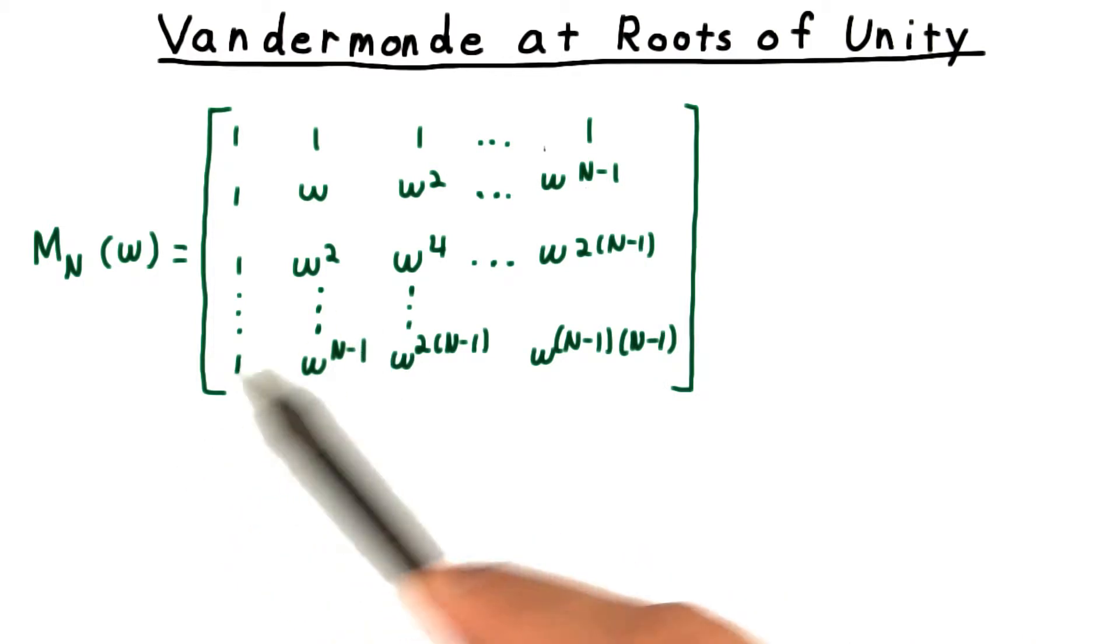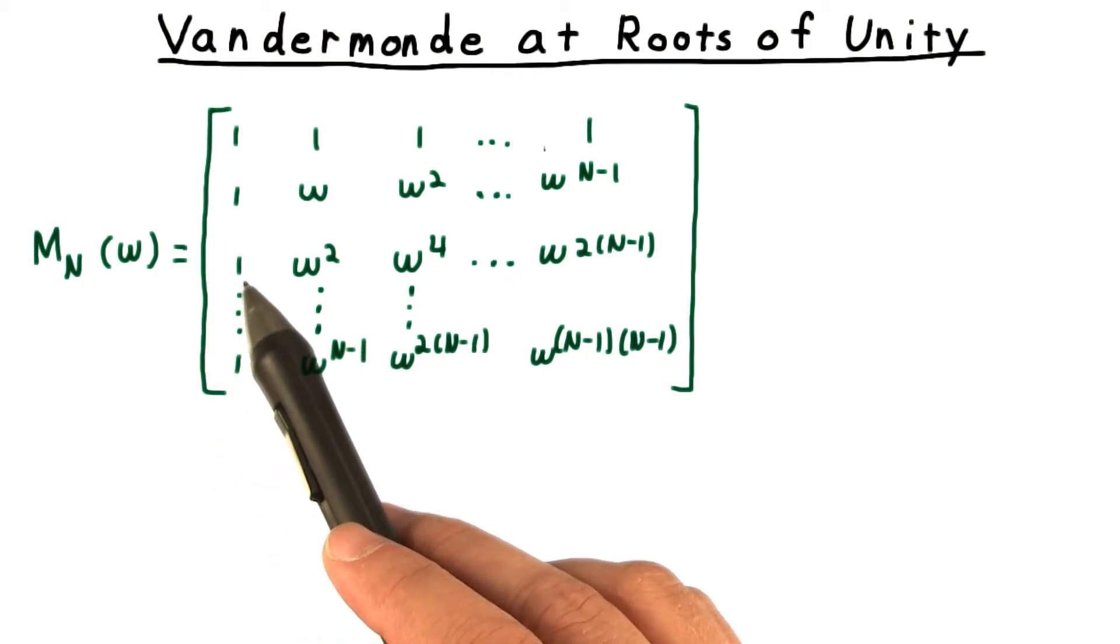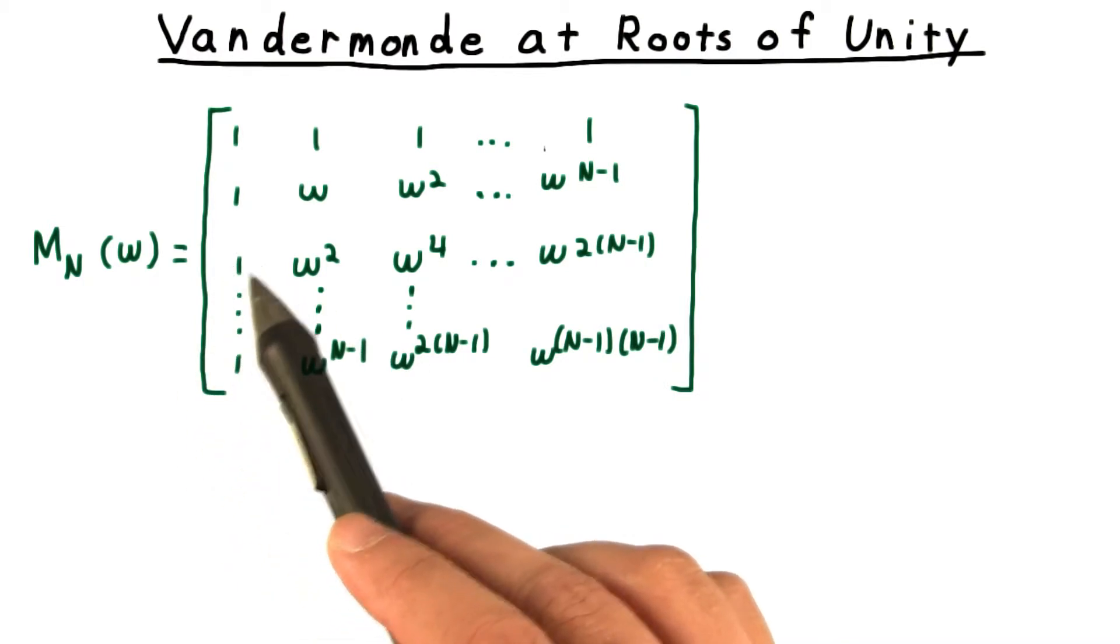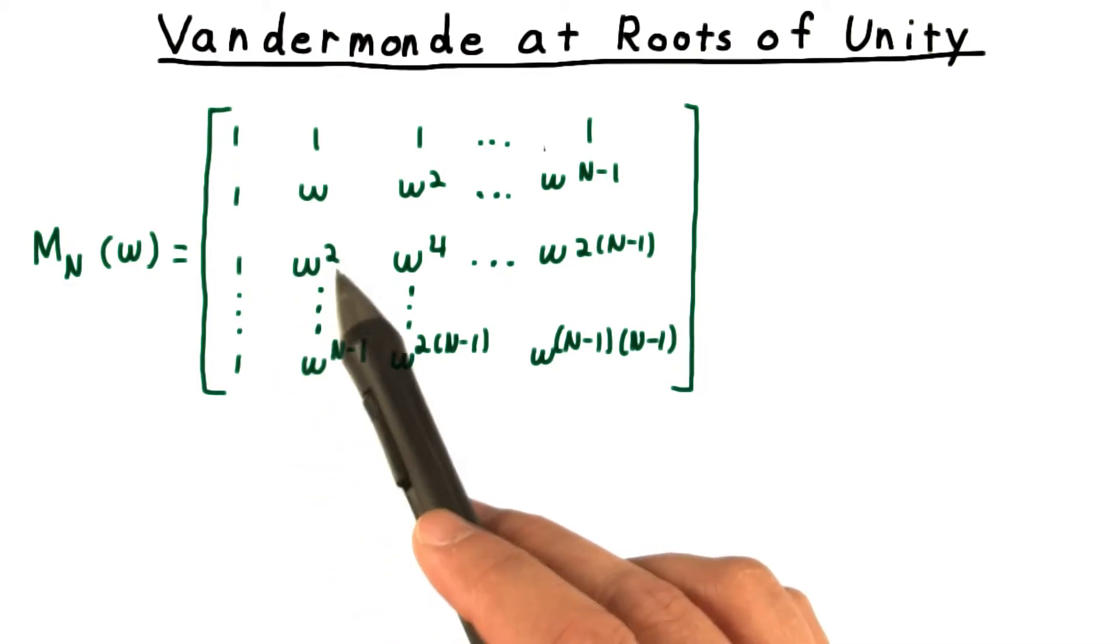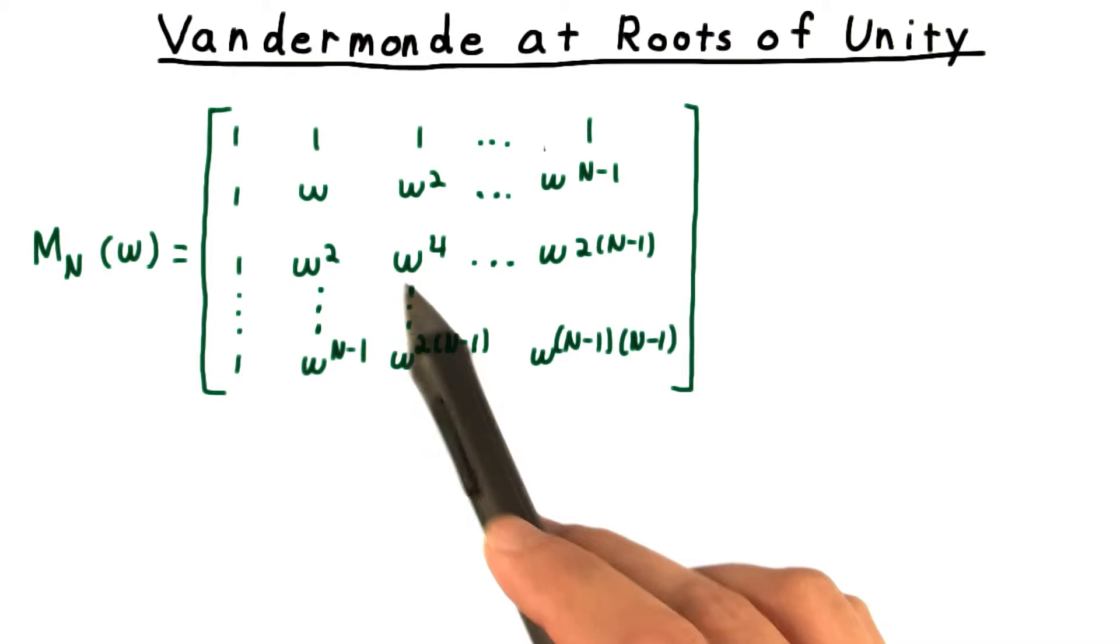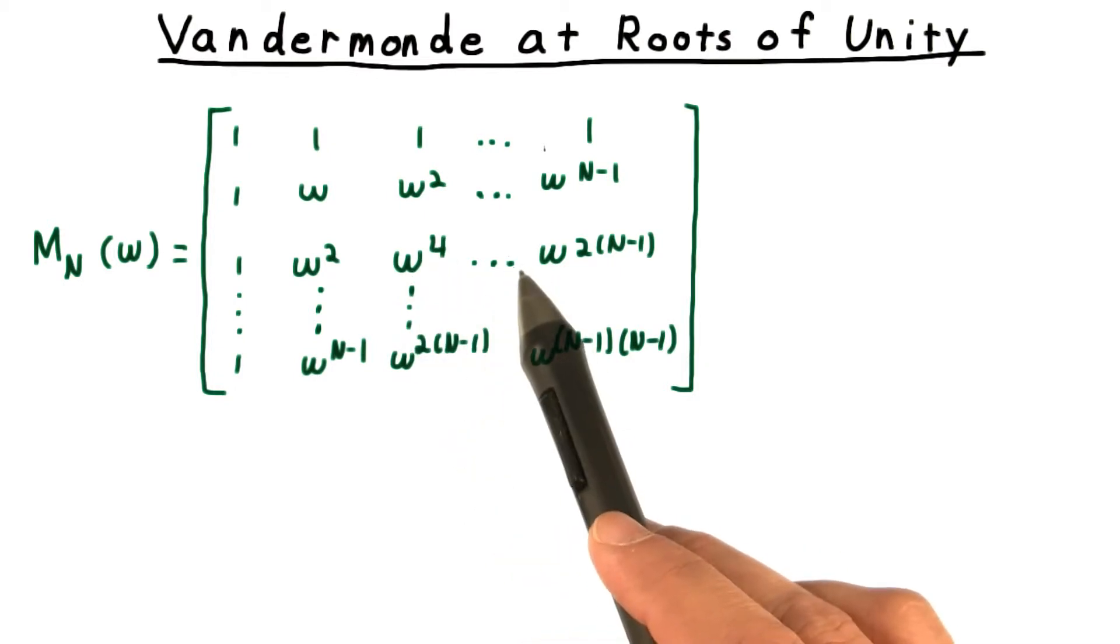The next value is omega to the second. So we go omega squared to the zeroth power is one, the first power ends up being omega squared, and then we have omega to the fourth, omega to the sixth, etc.